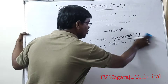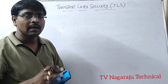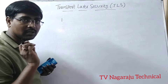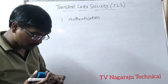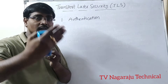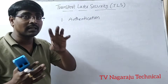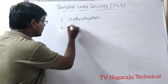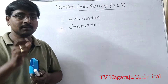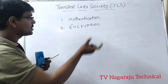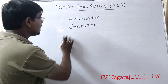TLS provides three main services. First, authentication — both parties verify each other's identity to confirm they are the original, legitimate client and server, with no other person involved. Second, encryption — TLS uses symmetric and asymmetric encryption algorithms so unauthorized persons are unable to access and the data is hidden from them.